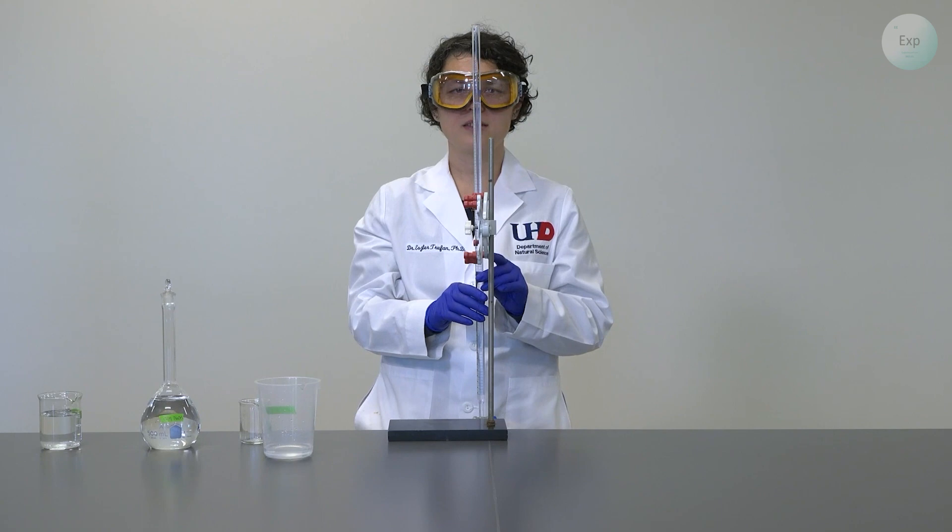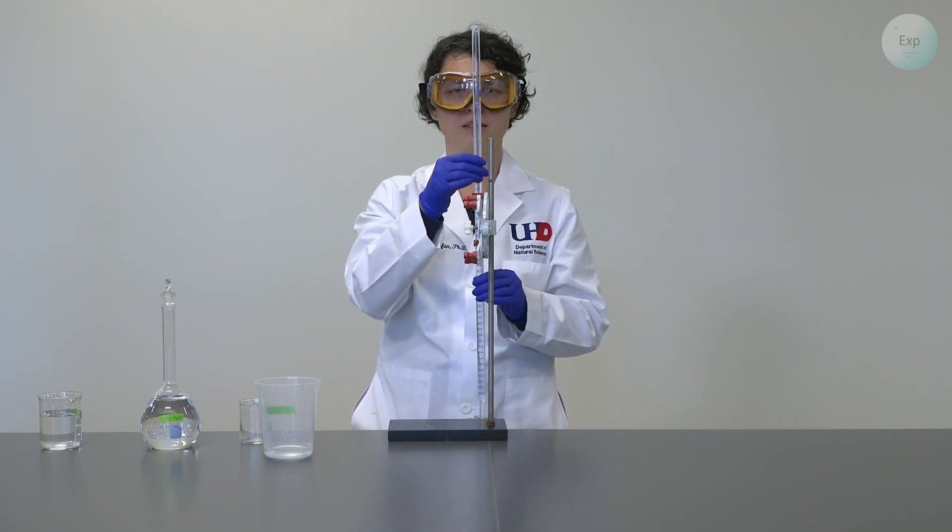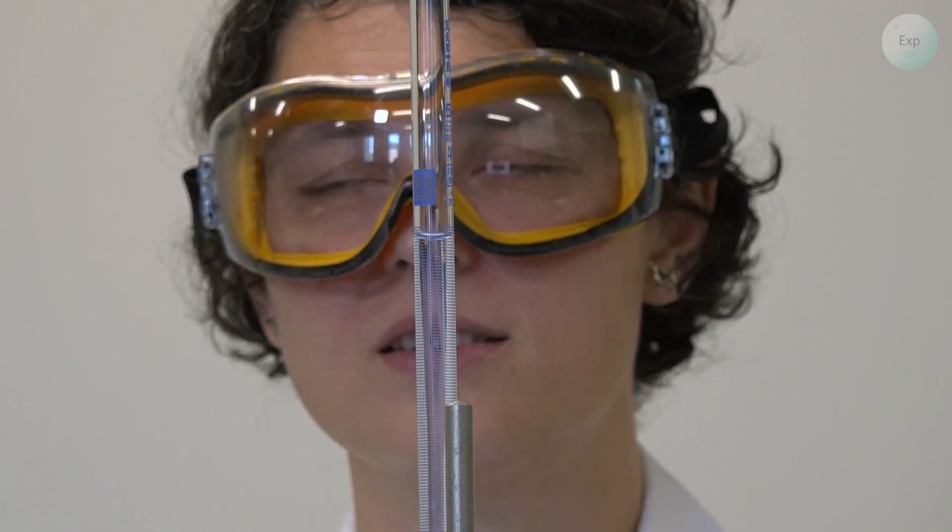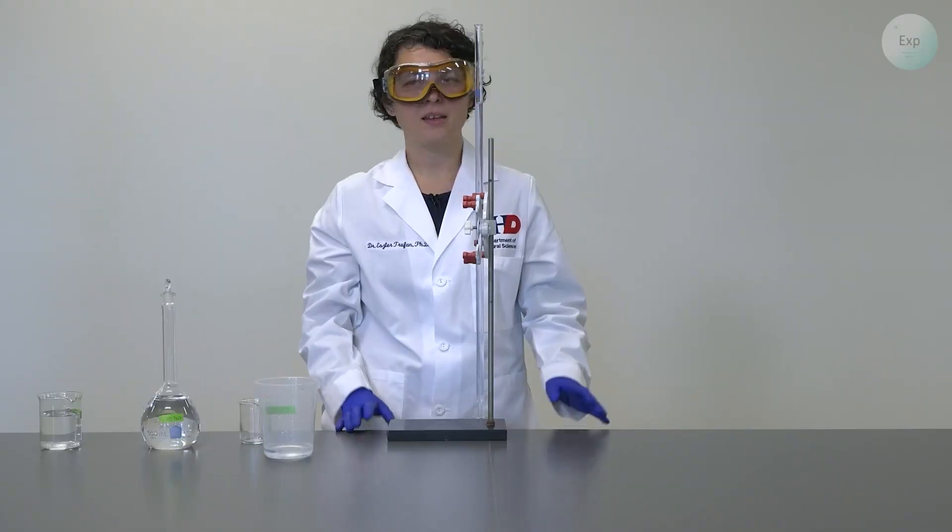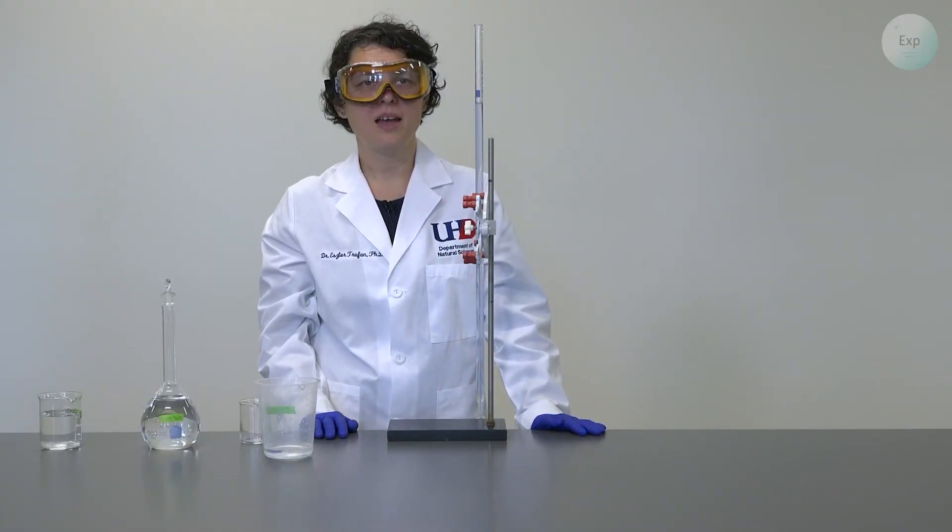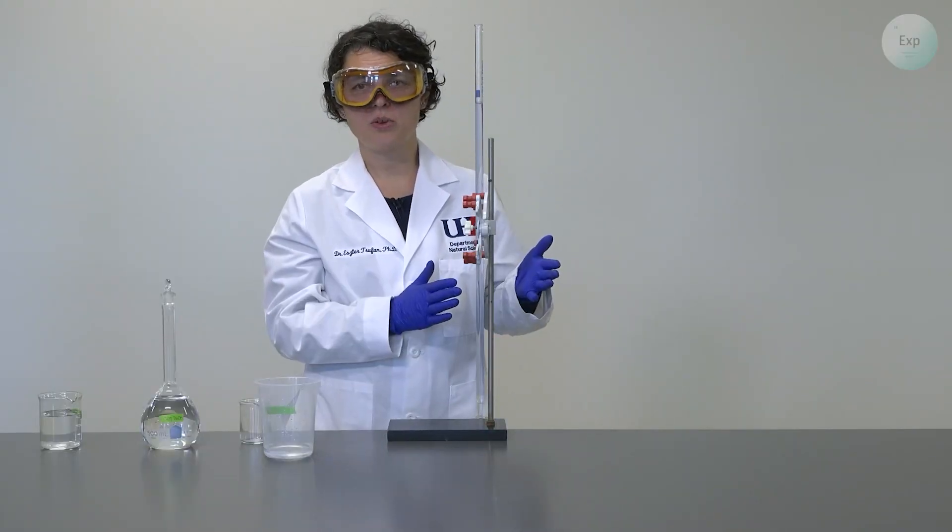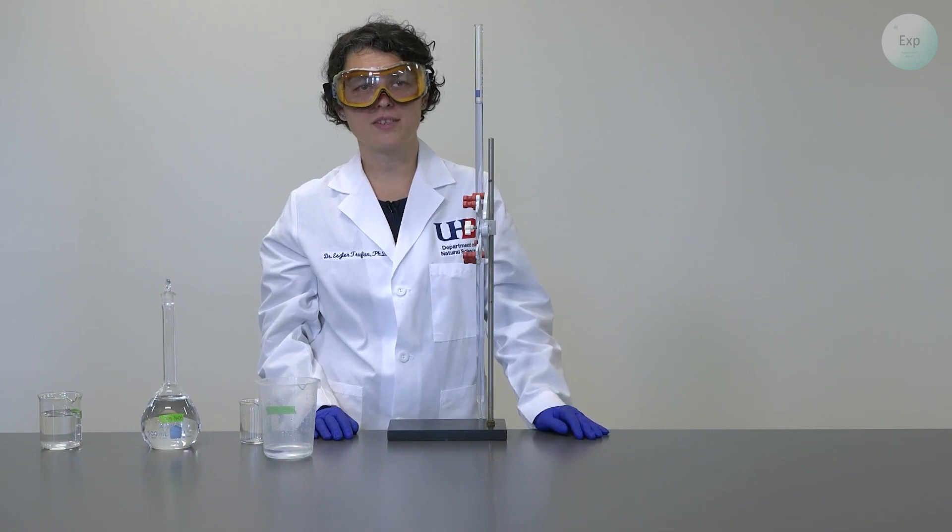In our case, the number is between 0.3 and 0.4, and it's closer to the 0.4, so it will be 0.39. That is our starting volume. And with that, we have a charged burette that is ready for its first titration.